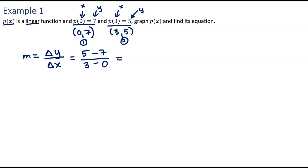Okay, so 5 minus 7 is negative 2. 3 minus 0 is 3. My slope is negative 2 thirds. So I can start writing my point slope form. Nope, I'm sorry. My slope intercept form.